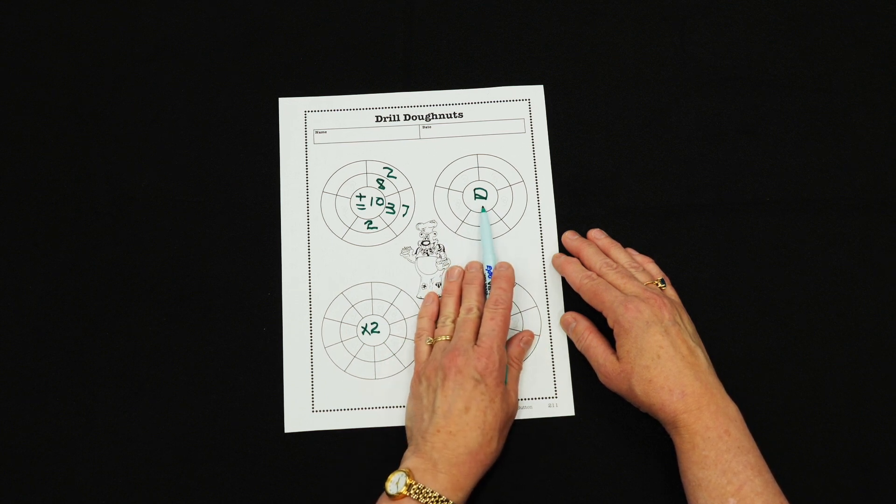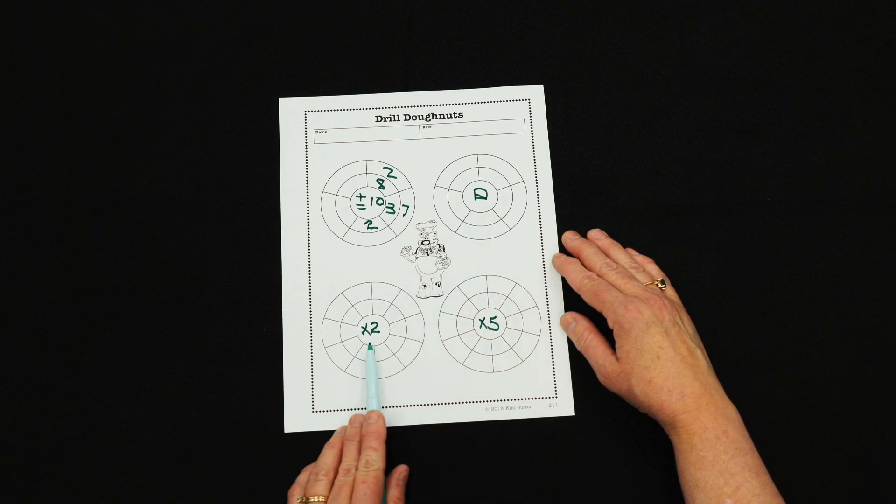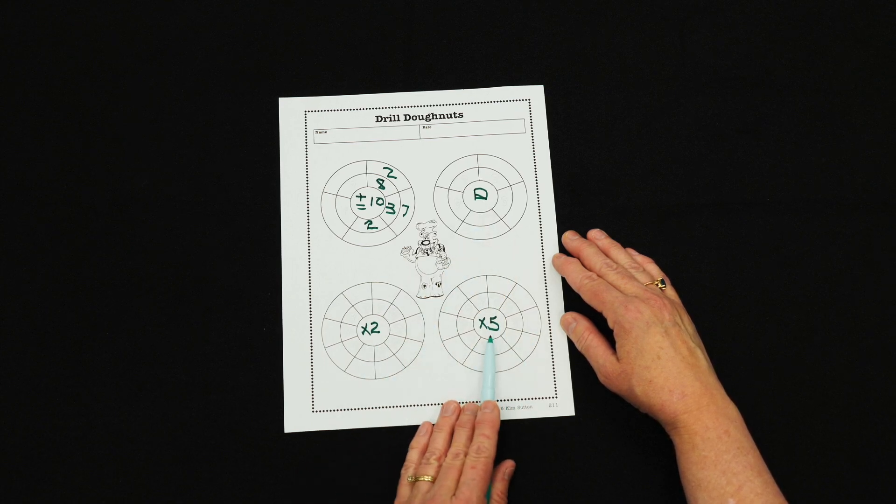For example, this big D stands for doubling. This stands for times two. This is times five. Students love the drill donuts.